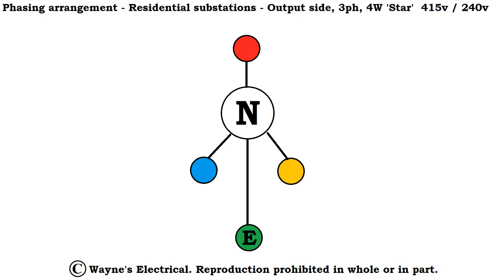So just to recap then, between any two phases, you get 415 volts, and between any phase and neutral, you get your 240 volts. Of course, that will vary. You do hear some people saying 400 volts and 230 volts, but as long as it's within the tolerances, it's roughly around about there.